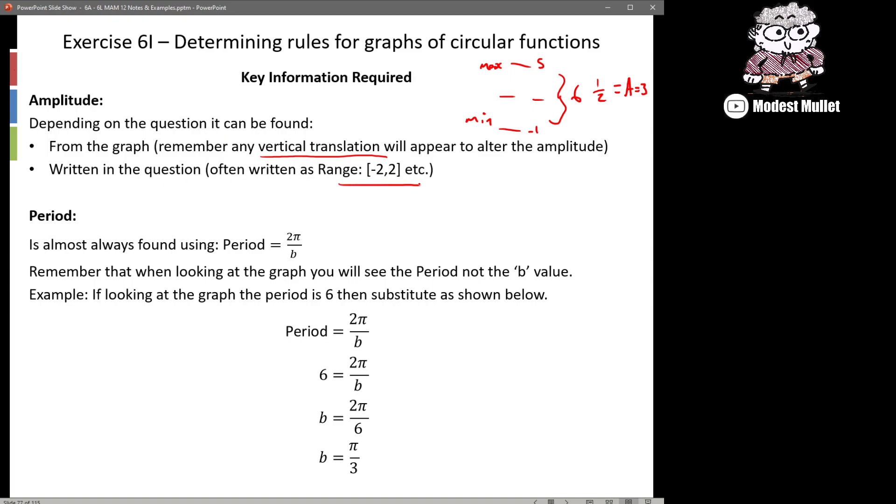The other way that it can be given to you is that you'll be given the range of the function. So the range is between negative 2 and 2, well obviously for that case the amplitude is going to be equal to 2.